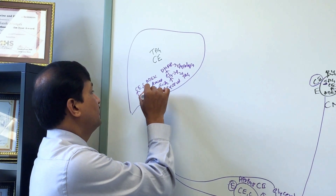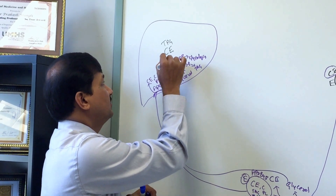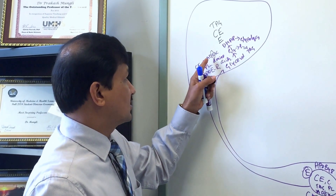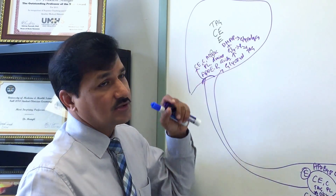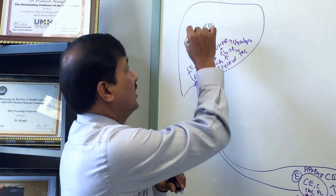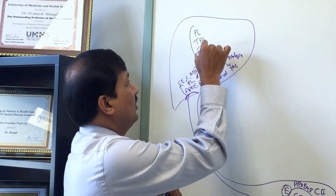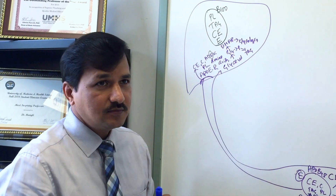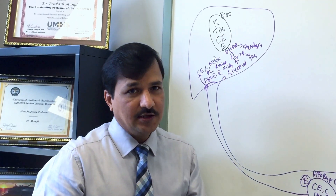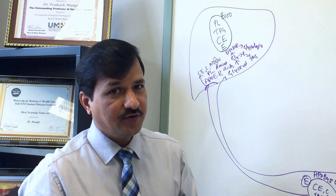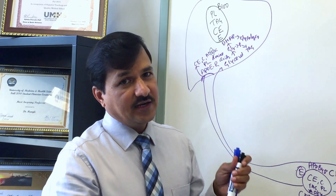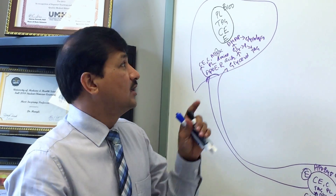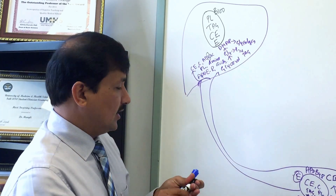Vitamin E from the diet also needs to be transported out by VLDL, whereas other fat-soluble vitamins A, D, and K have separate transporters. Vitamin E and some phospholipid are loaded onto ApoB100. Lipids come from the smooth endoplasmic reticulum and ApoB100 from the rough endoplasmic reticulum; lipids are transferred into the rough ER by MTP (microsomal transfer protein). That is how VLDL is assembled.